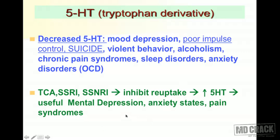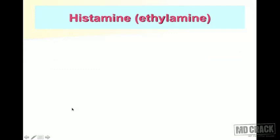Increasing 5-HT is also useful in anxiety states and pain syndromes. This is why SSRIs are not only used in depression but also in anxiety states and pain syndromes.